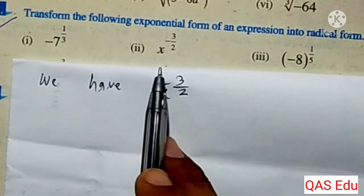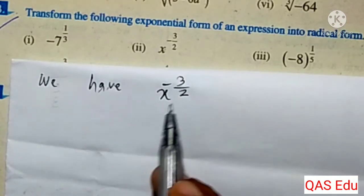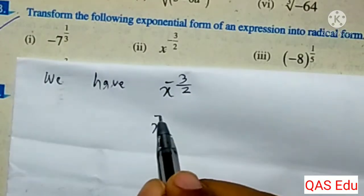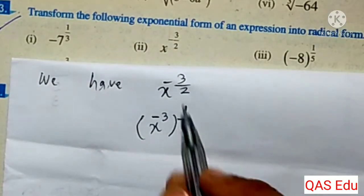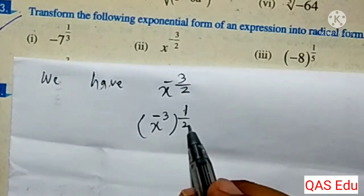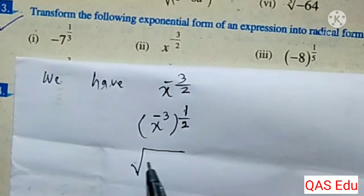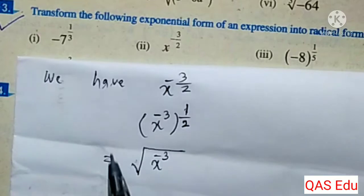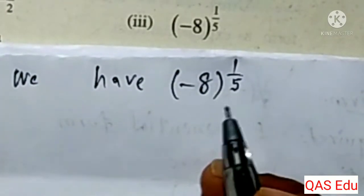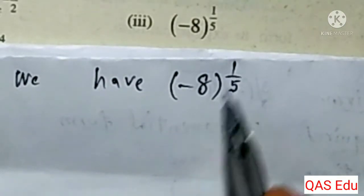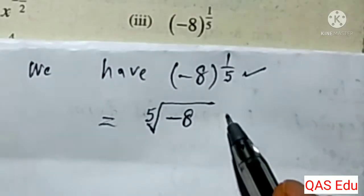Part 2: the given expression is x to the power minus 3 over 2. The required form is radical form. We have x power minus 3 over 2, which can be written as 1 over root of x cubed, where the index is 2 and the radicand is x to the power 3. The 2s cancel to give the simplified radical form.